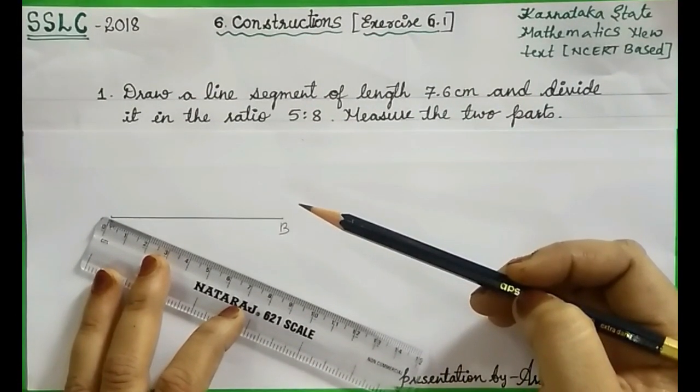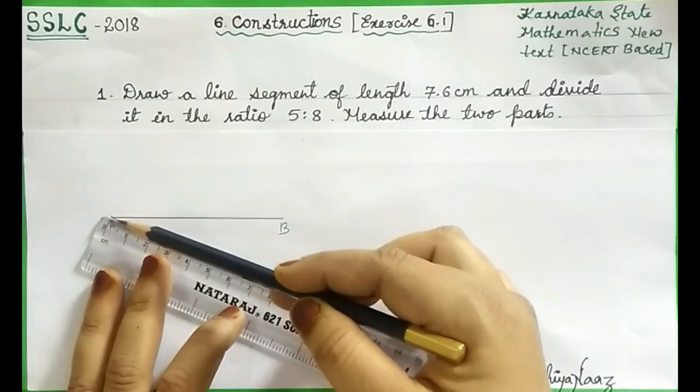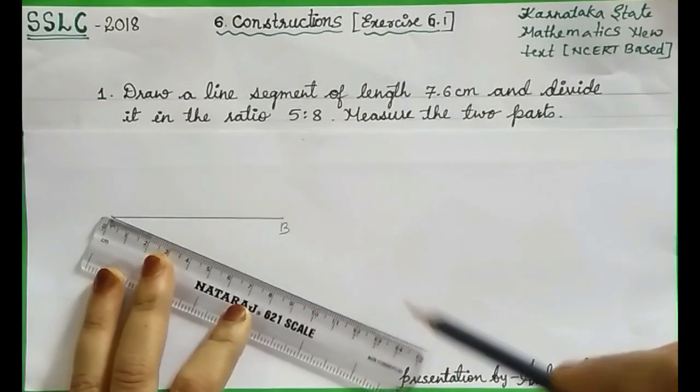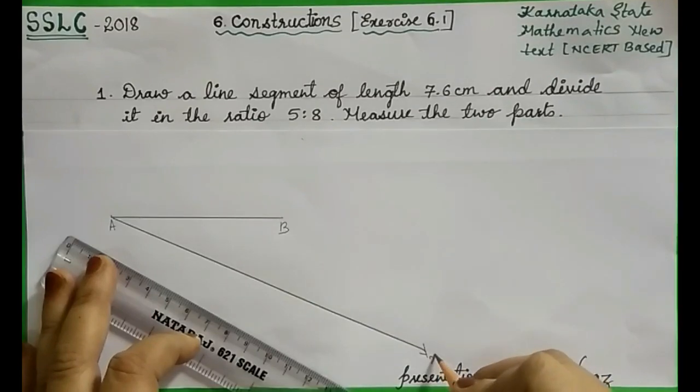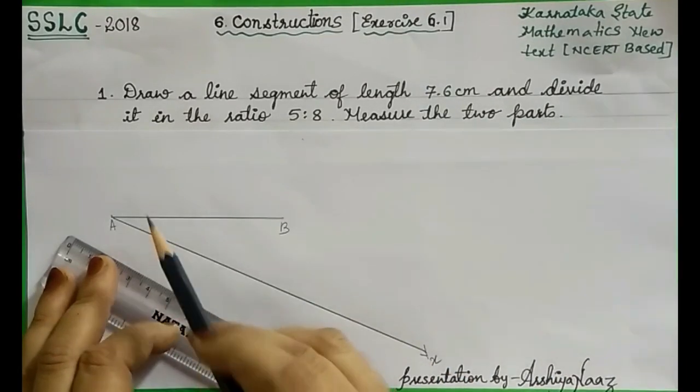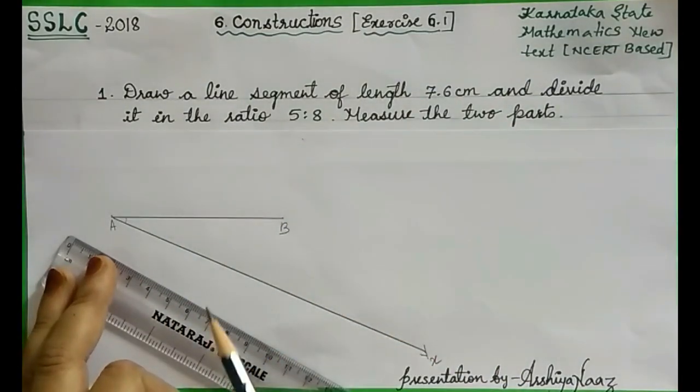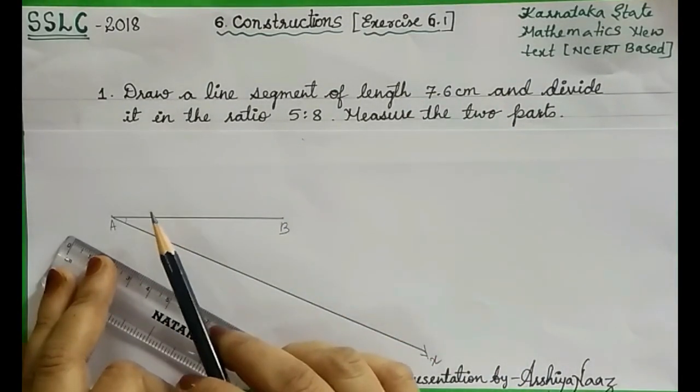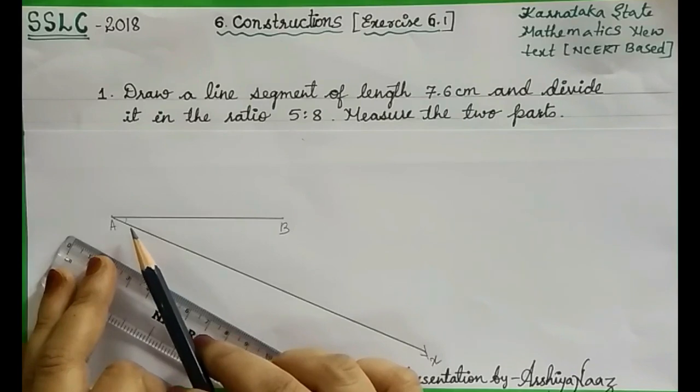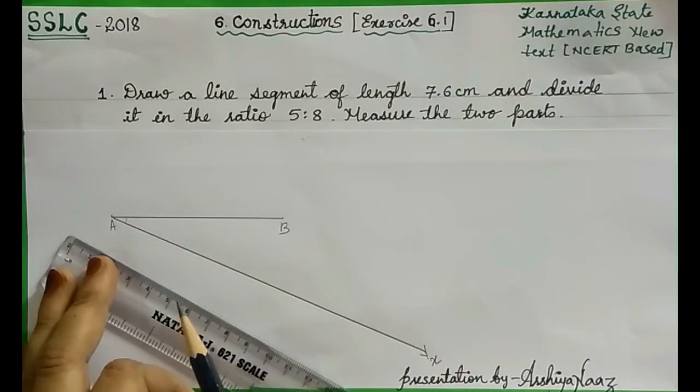Here you can see I am drawing a ray. Let the ray be AX, which is making an acute angle with line AB. Acute angle means the angle which is less than 90 degrees. Approximately you have to take it as an acute angle here.